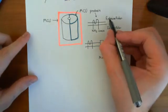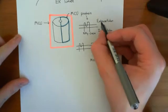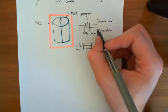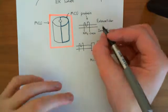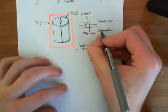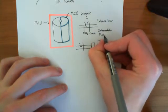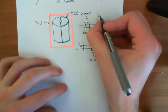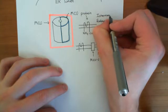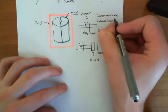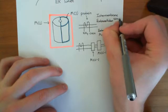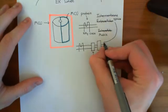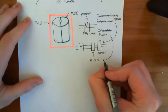I just realised I've labelled this completely wrong. I've labelled this as extracellular and intracellular, but of course we are talking about a protein that is in the inner membrane of the mitochondria. So this should be the matrix side of the mitochondria, and this should be the side that faces the intermembrane space — intermembrane space. So this is the intermembrane space here, and this is the matrix of the mitochondria here.